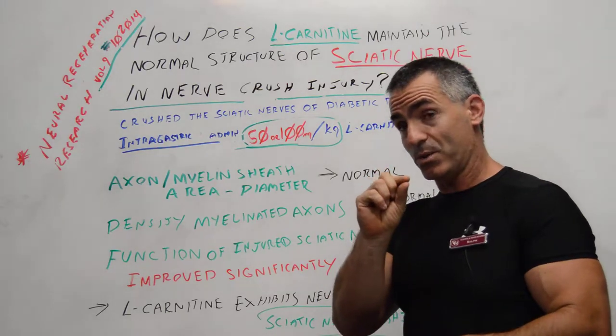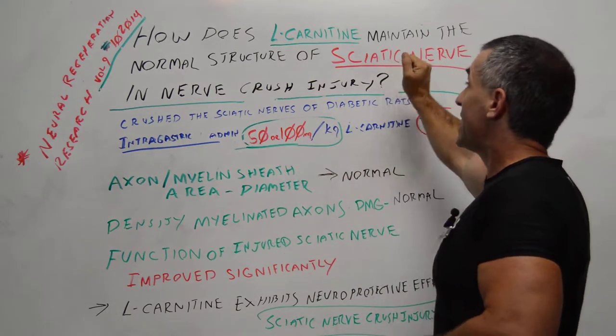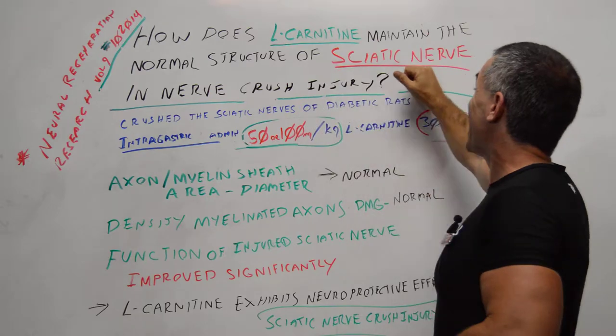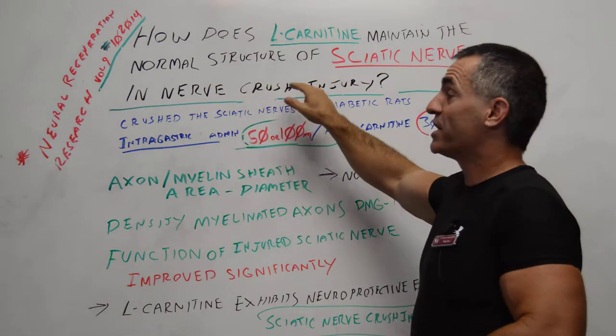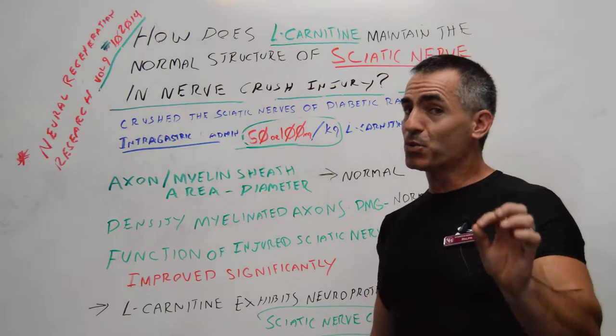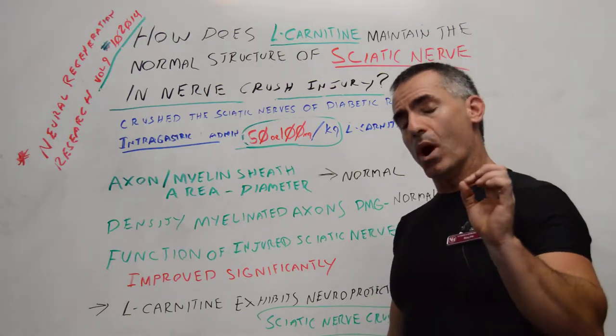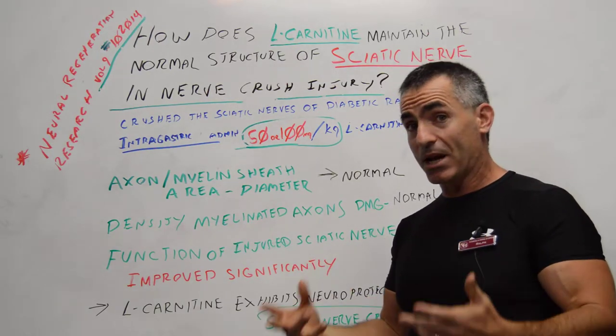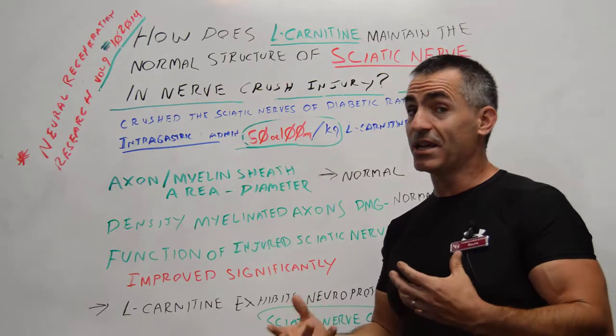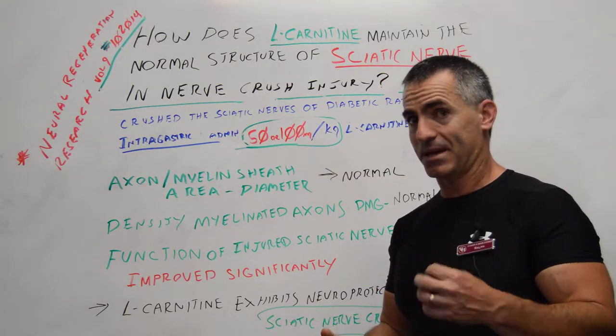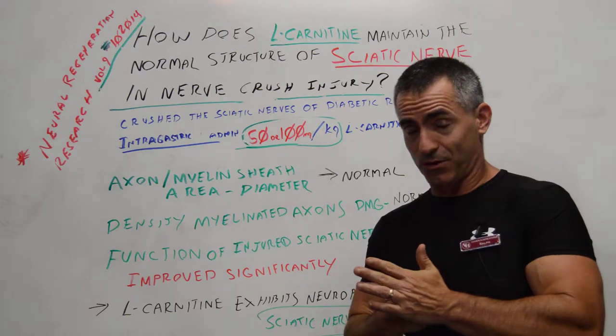That L-carnitine, the single amino acid, maintained the normal structure of sciatic nerve in nerve crush injury. Now here's where it gets a little macabre. What they did is they took diabetic rats, because they tend to have the hardest time healing, and they crushed the sciatic nerve.